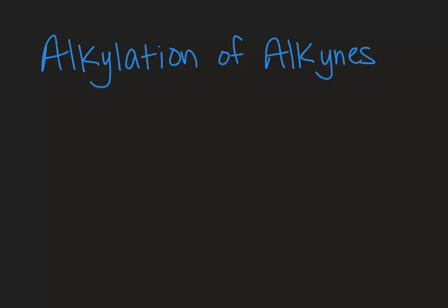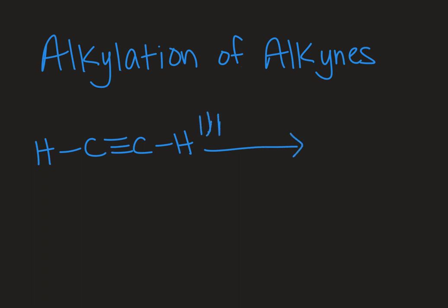Welcome to Chemistry with Caroline. In this video, we're going to look at the alkylation of alkynes. We'll start with acetylene — the common name, also called ethine — and we're going to make a carbon-carbon bond. Alkylation means we're introducing an alkyl group, which is a carbon group. If you're taking organic chemistry in the traditional sequence, this is your first opportunity to make a carbon-carbon bond, which can be useful in a complex synthesis problem.